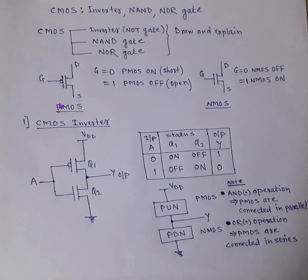This is the symbol of PMOS — P-channel metal oxide semiconductor field effect transistor — with drain, source, and gate. The bubble in the symbol indicates PMOS. If G is 0, meaning the gate is connected to ground and potential is 0, then PMOS is on and ideally acts as a short circuit. If G is equal to 1, PMOS will be off, meaning ideally an open circuit.